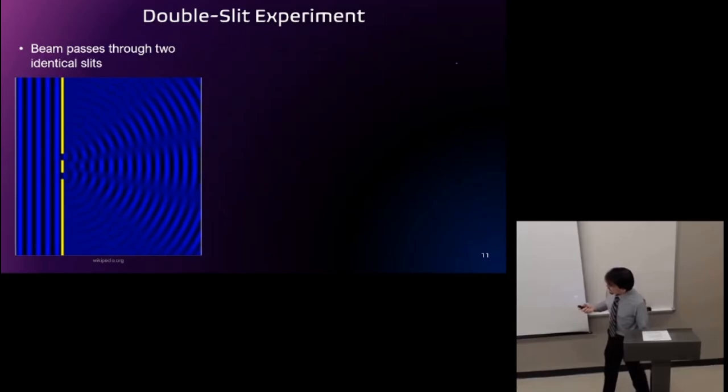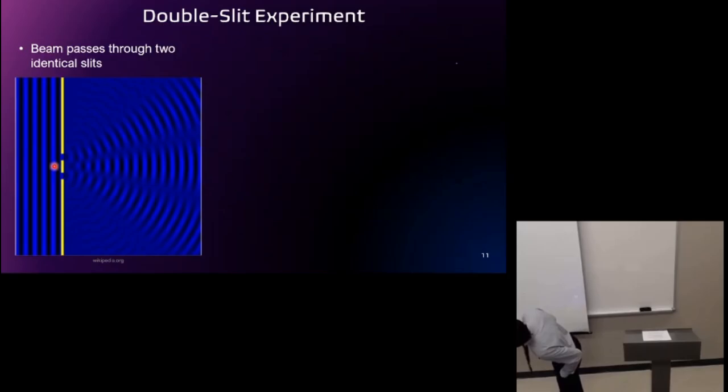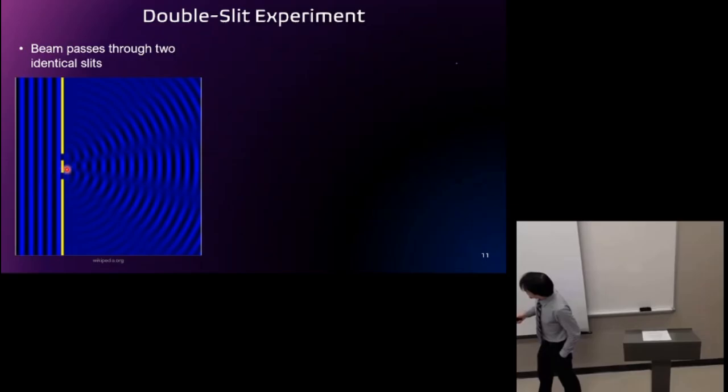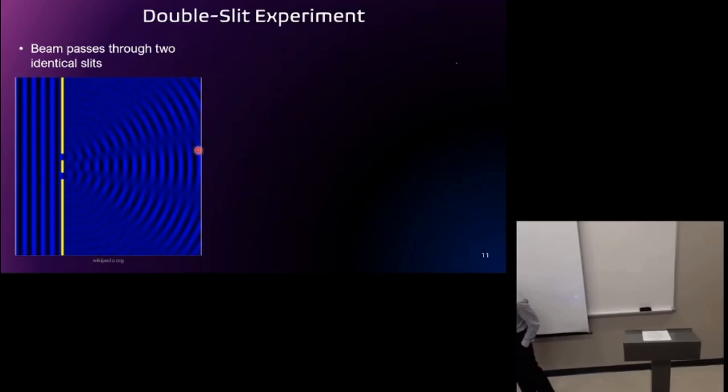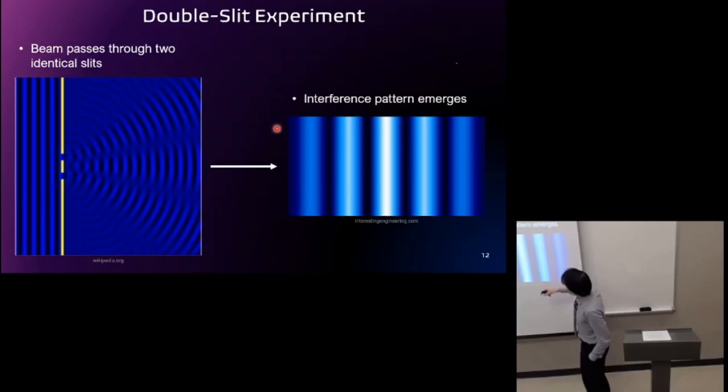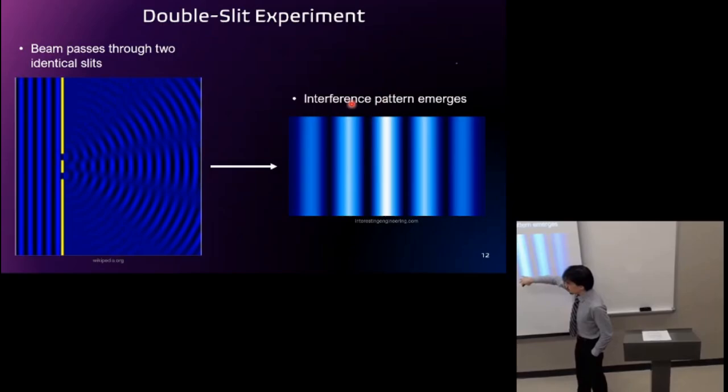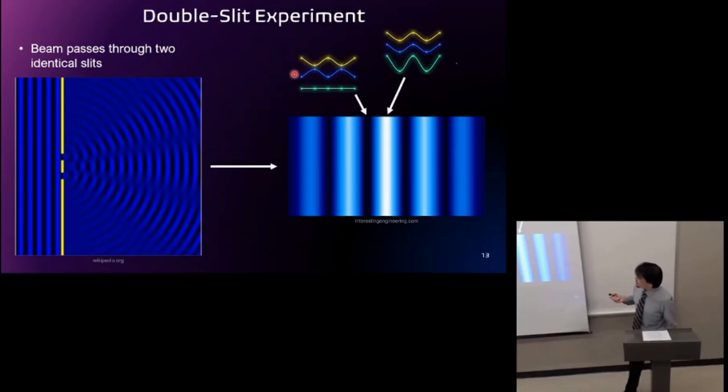So the experiment looks a little bit like this. You set up two slits, you pass a beam of light through it. The result is light comes out of the two slits, and in certain places you will get constructive interference and destructive interference in other places. And the result is a pattern like this. Where the waves align, you get bright spots. Where the waves don't align, you get dark spots.